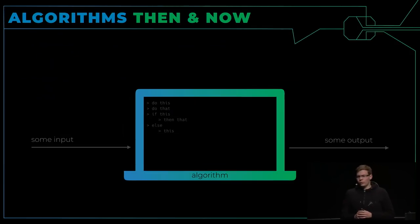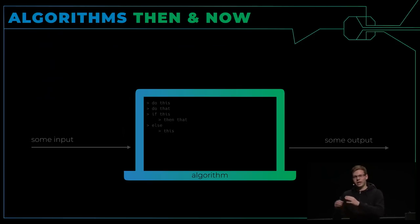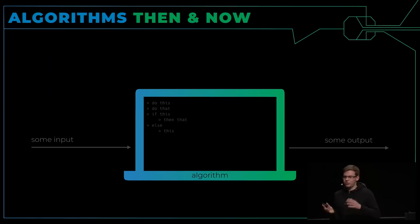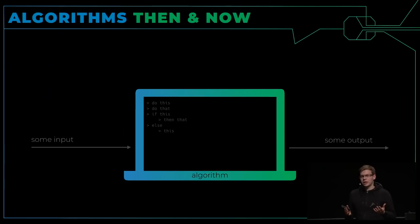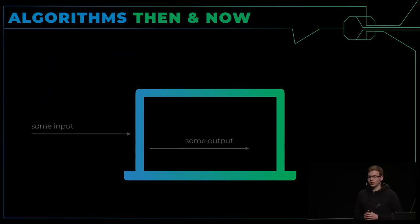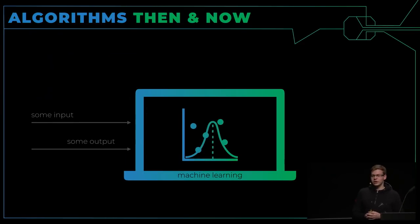Fangen wir also an mit einem Intro für Deep Learning. Wir wissen alle, wie man programmiert — wir programmieren auf eine sehr einfache Art und Weise. Es gibt eine gewisse Menge an Eingabe, dann gibt es einen Algorithmus, der sagt: mach das, mach das. Wenn wir das machen, dann machen wir irgendwas anderes. Und dann erzeugen wir irgendeine Art von Ausgabe.